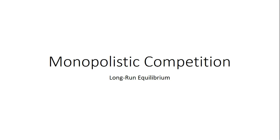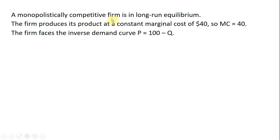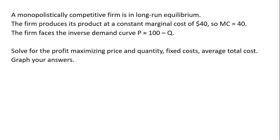In this video, I'm going to present a long-run equilibrium problem for the market structure of monopolistic competition. We have a monopolistically competitive firm who is in long-run equilibrium. The firm produces its product at a constant marginal cost of $40, and the firm faces an inverse demand of P equals 100 minus Q. We want to solve for the profit-maximizing price and quantity. We also want to find the firm's fixed cost, its average total cost equation, and at the end, we'll graph our answers.